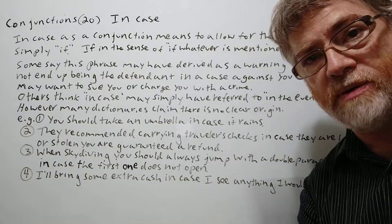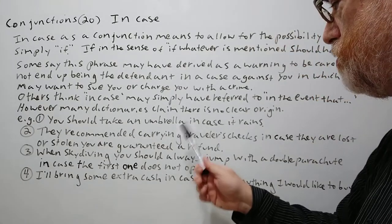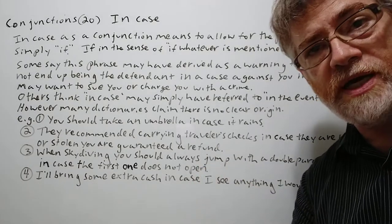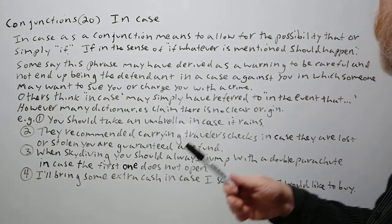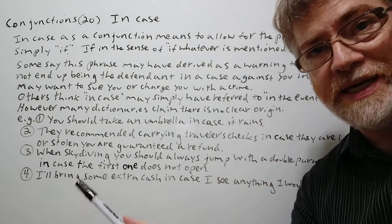And we got four examples to show just how it's used. Here's the first one. You should take an umbrella in case it rains. If it rains, in the event that it rains, in the possibility that that should happen.